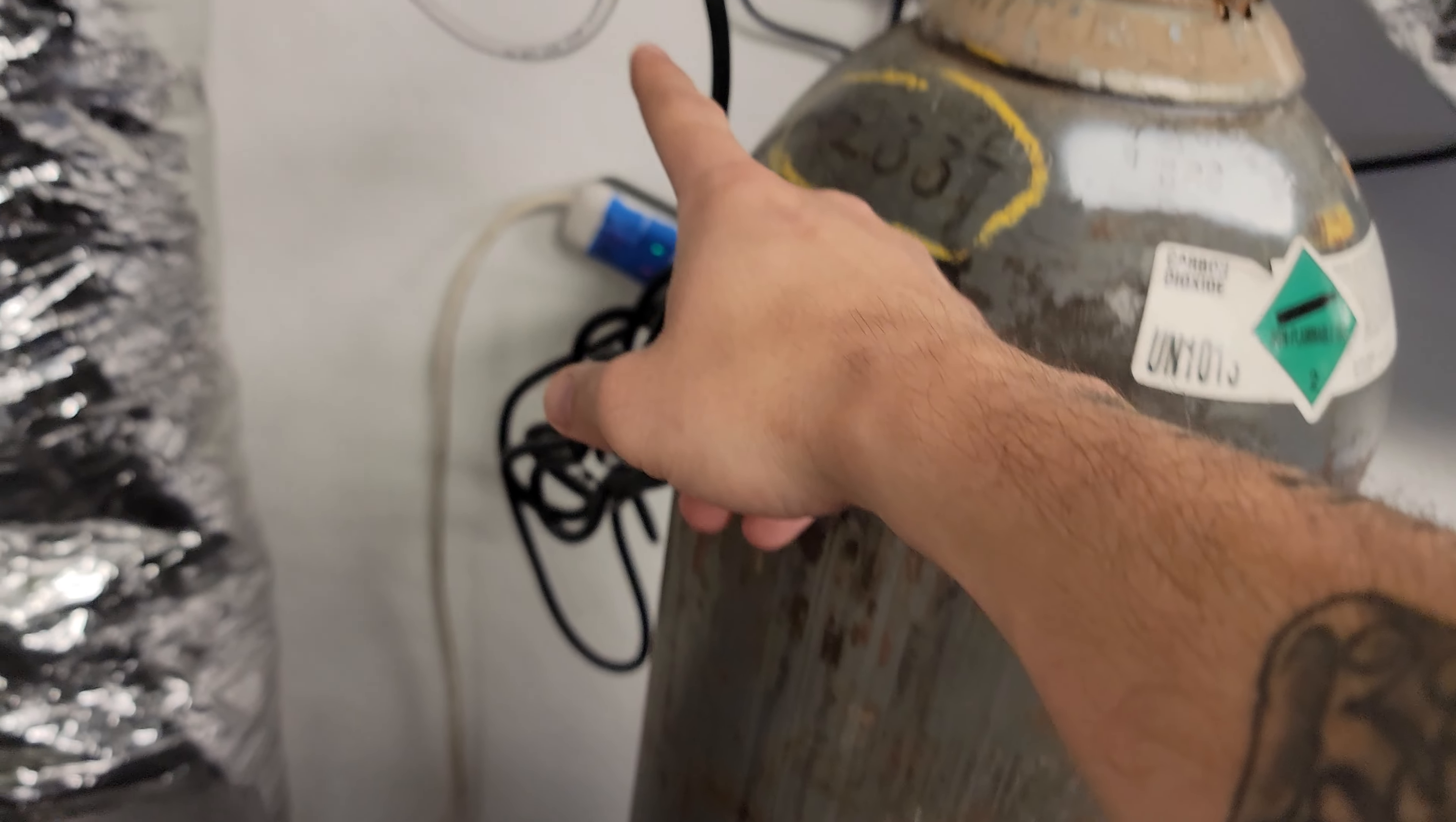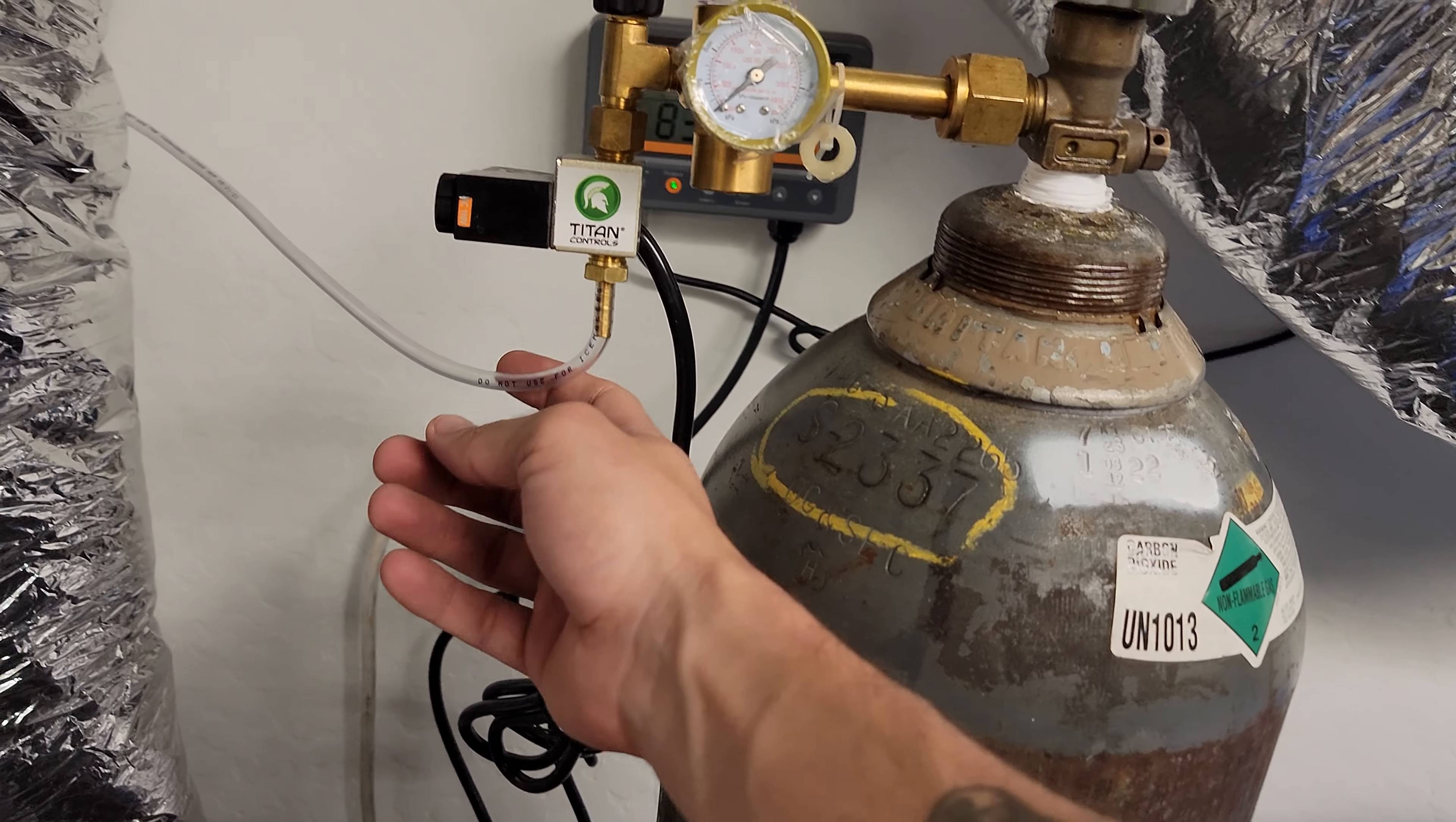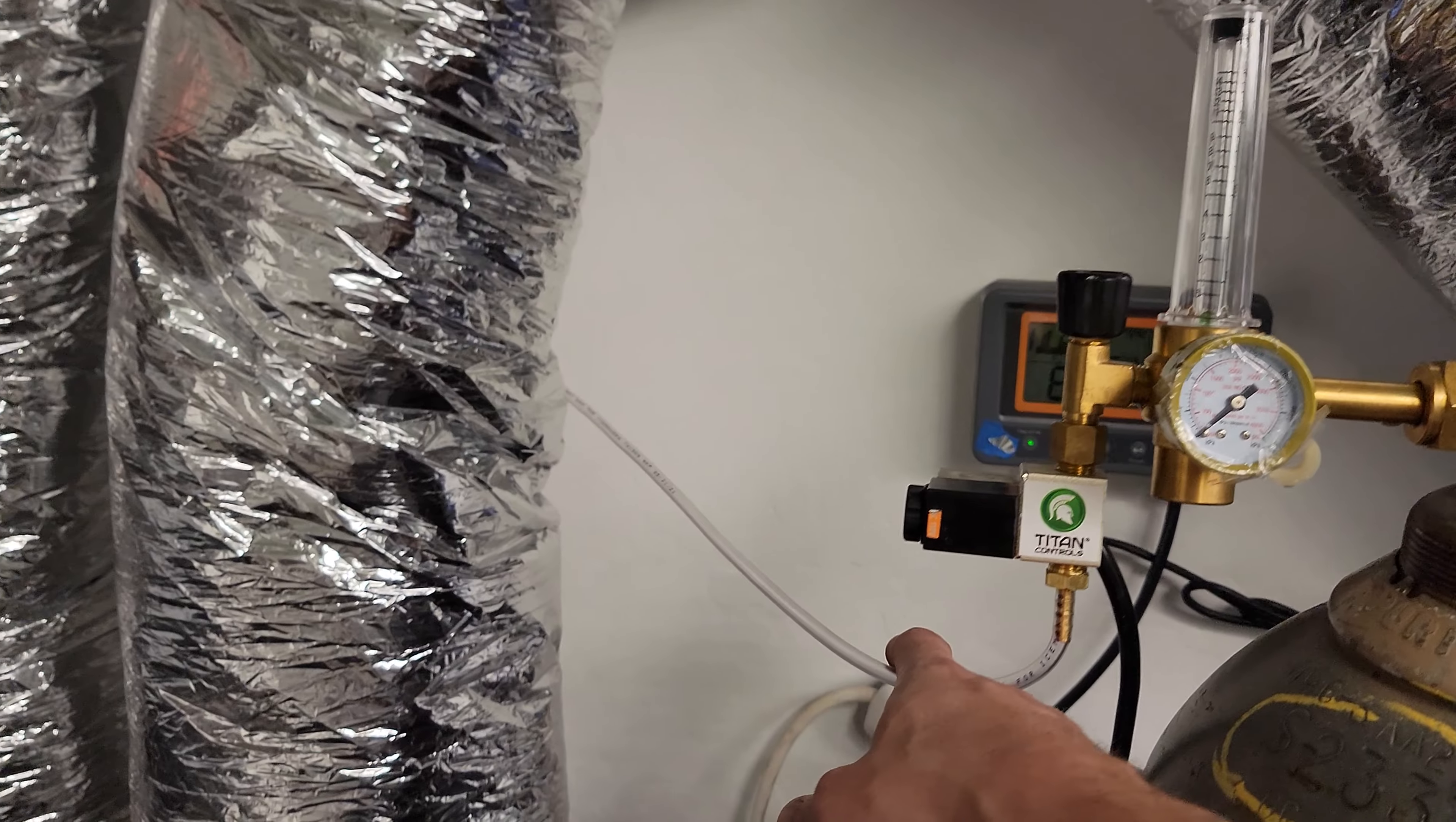As you can tell, the little hose here—they usually come with a hose. I like the clear hose because if water gets in this line, it will prevent it from leaking out because this can get really cold, like I said.